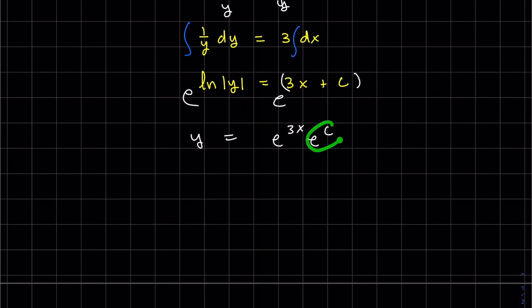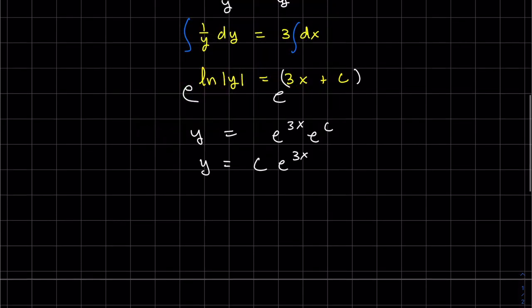But e to the c, some constant raised to another constant, we can just call that c. And this is our general solution. Our general solution has one constant in it if it's first order. If it's second order, it has two constants in it, and so on.